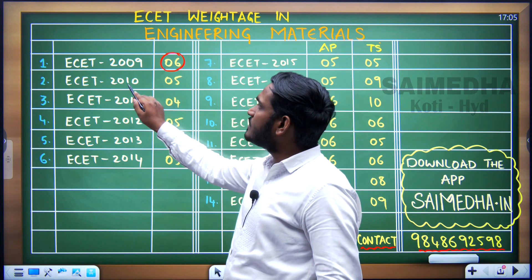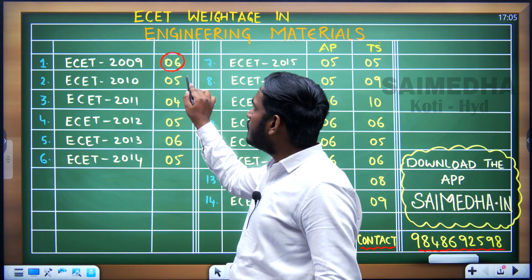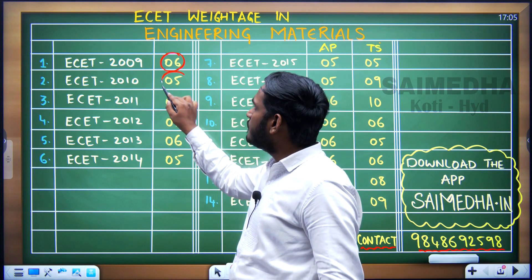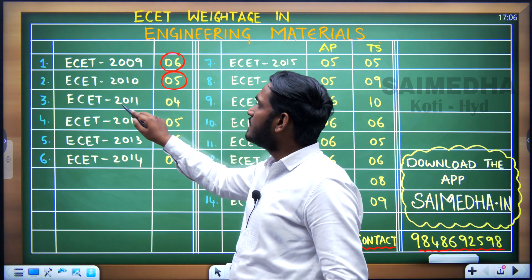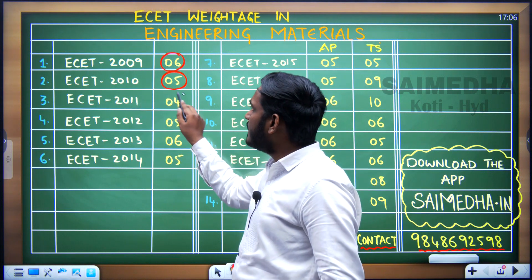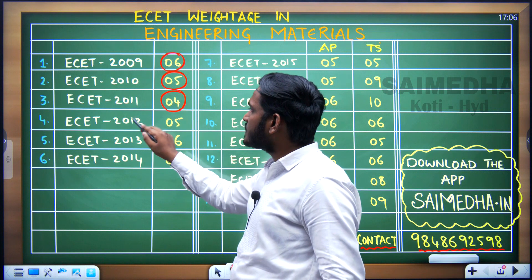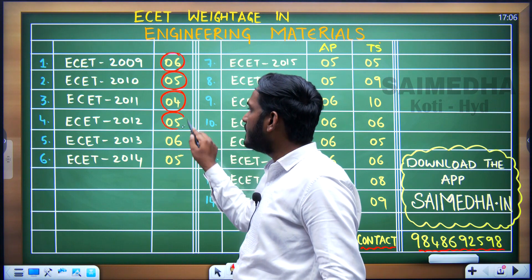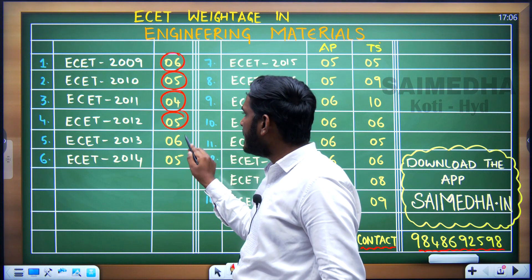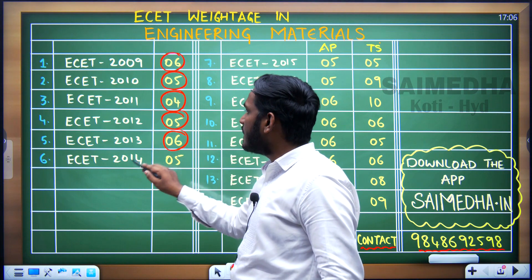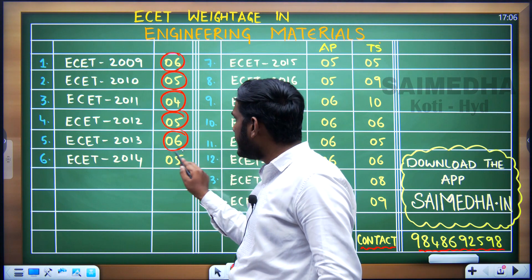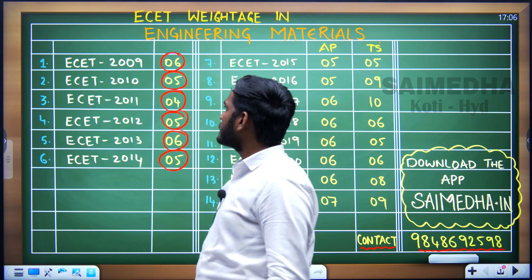Similarly, in 2010 we got 5 marks, then 2011 — 4 marks, 2012 — 5 marks, 2013 — 6 marks, 2014 — 5 marks. If you see the average of these marks, we can say it is around 5 to 6 marks from 2009 to 2014.